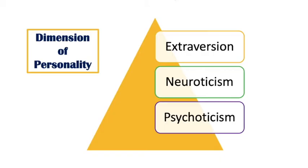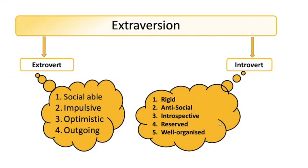Aage unhone personality ke teen dimensions liye. On the basis of a questionnaire unhone personality ko define kiya, aur us mein teen dimensions ka use karte the. Isi liye isko three-factor personality theory bhi bola jata hai. Us mein extraversion mein agar person high score karta hai toh woh person extrovert hoga, aur agar low score karta hai toh woh person introvert hoga.